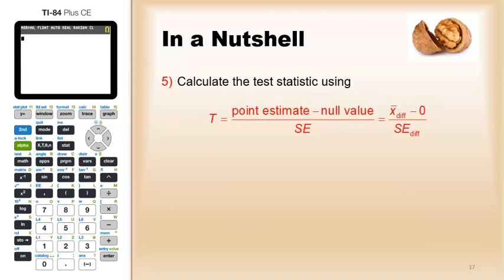From there we calculate the test statistic: point estimate minus null value over standard error. Since the null value is zero, it's really the point estimate, the average of the differences, divided by the standard error of the differences.